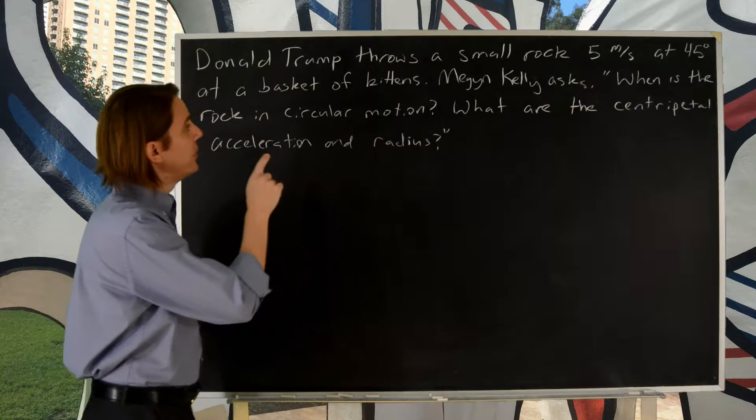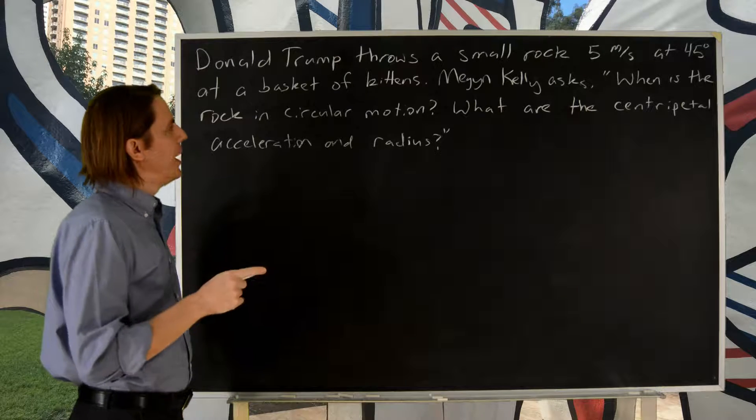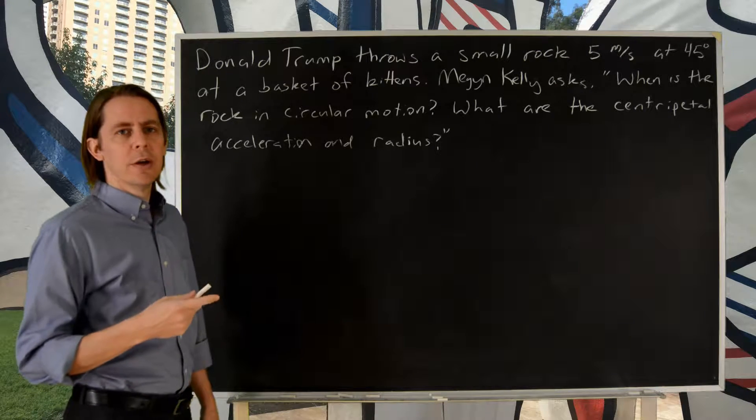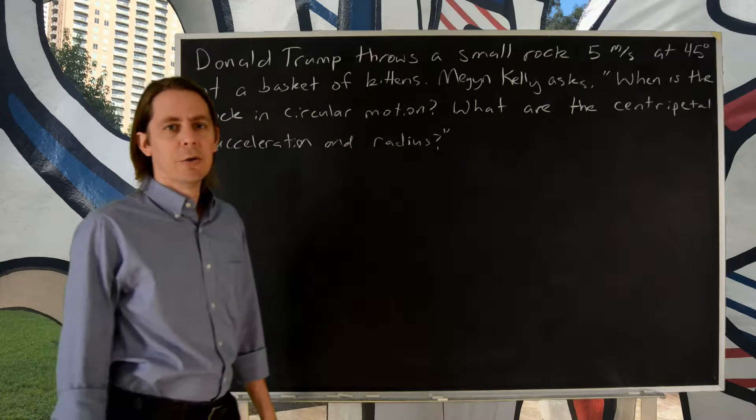In this problem, Donald Trump throws a small rock 5 meters per second at 45 degrees at a basket of kittens. Megyn Kelly asks, when is the rock in circular motion? And in that circular motion, what are the centripetal acceleration and the radius?